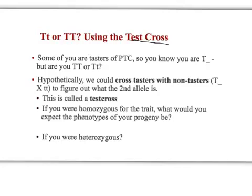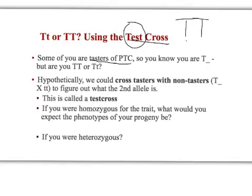A test cross is a cross we do where we're testing to see what allele a given organism has. For example, if we look at the ability to taste a chemical called PTC: if you have the dominant allele, the capital T, you're able to taste this chemical. If you have dominant-dominant or dominant-recessive you can taste it, but if you have two little t's you cannot taste PTC.